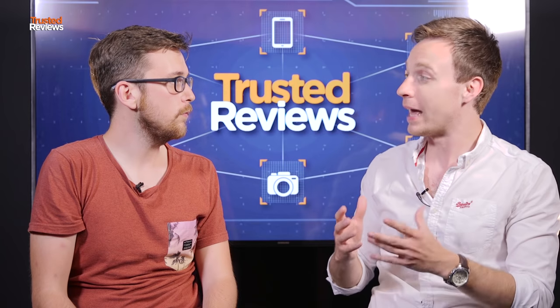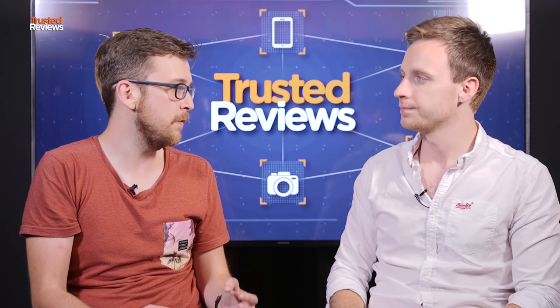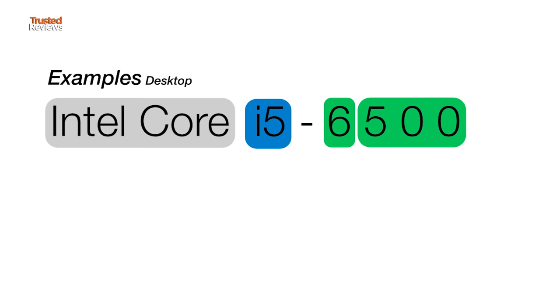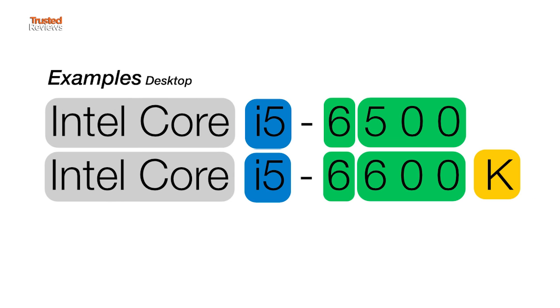What we've talked about so far are laptop processors. Is it the same for desktops? Kind of, although laptop versus desktop Intel Core i chips are quite different in terms of features. Desktop chips either have no suffix — so i5-6500, for example — or a K suffix, like i5-6600K, which denotes an overclockable chip that you can increase the clock speed of.